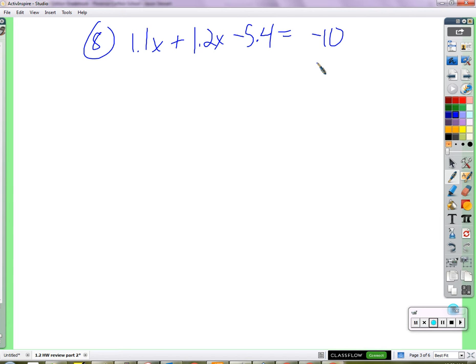Adding. Brandon? Never mind. Robert? Add 1.1x plus 1.2x. Combine those x's, right? We've never had that before, this section. So we combine like terms first, we get 2.3x minus 5.4 equals negative 10.